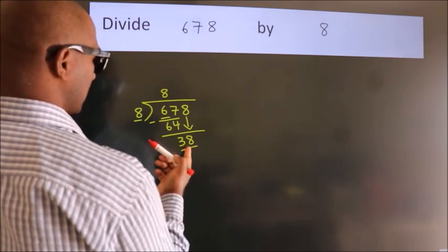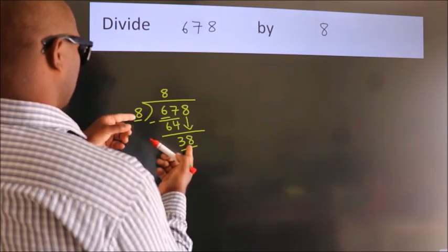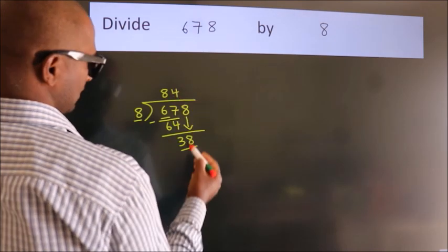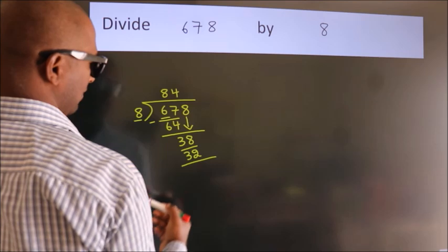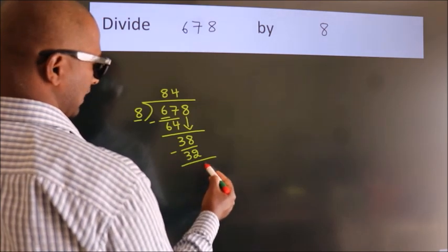A number close to 38 in the 8 table is 8 fours, 32. Now we subtract and get 6.